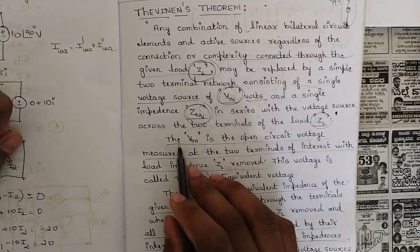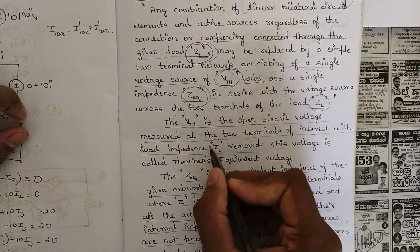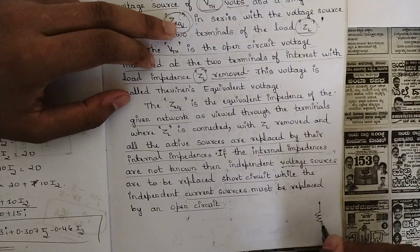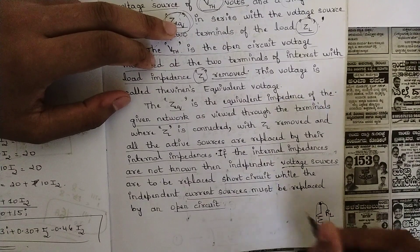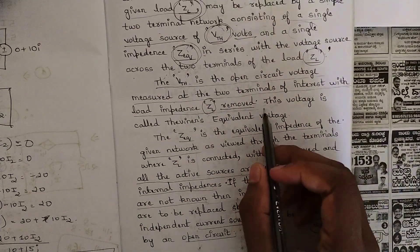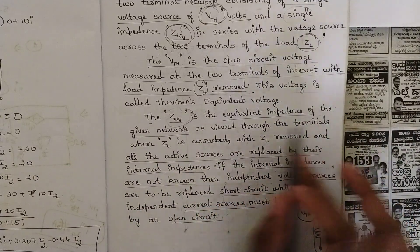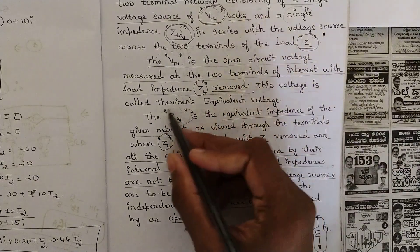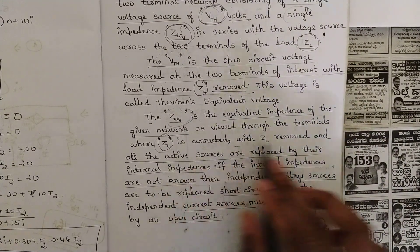The Thevenin voltage V_th is the open-circuit voltage measured at the two terminals of interest with load impedance Z_del removed. In the circuit there is one load resistance or load impedance — typically labeled R_L — which we remove. After removing that branch, the voltage we find is called the Thevenin equivalent voltage. The equivalent impedance Z_eq of the given network is viewed through the terminals where Z_del was connected, with Z_del removed and all active sources replaced by their internal impedances.